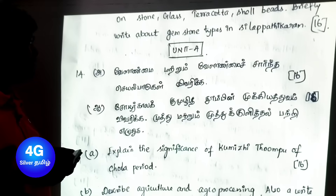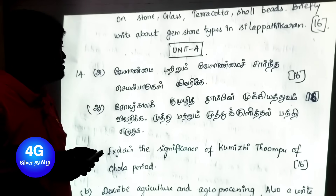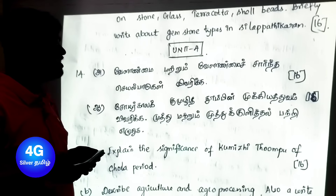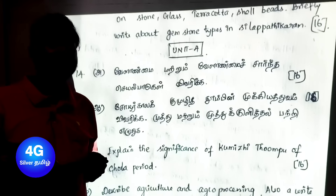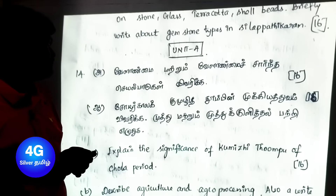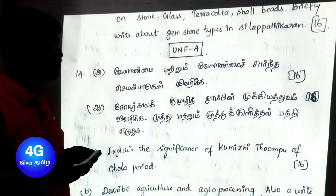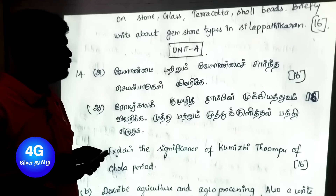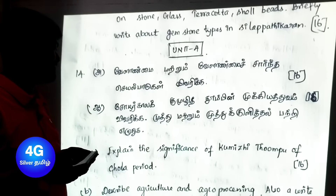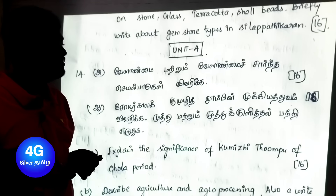Unit 4 important Part B questions include: Explain agriculture and agricultural activities (Velaanmai and velaanmai sandha seyal padukal). Describe the significance of kumiri irrigation (kumiri thooombin mukhiya thubam). Also write about pearl diving and pearl harvesting (Mutthu matchum, mutthu kodithal).